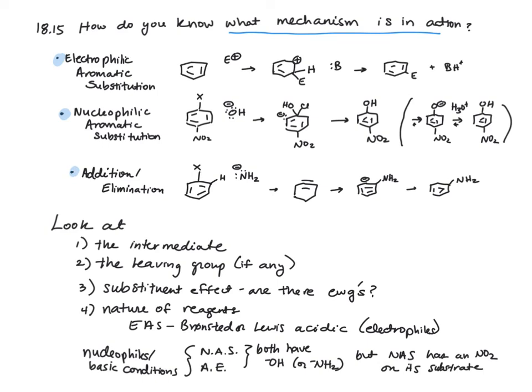In electrophilic aromatic substitution, the key thing is that we're going through this arenium intermediate. This requires the benzene ring to attack an electrophile. That means we have to have a really good electrophile in solution - species that want to accept electrons very much.